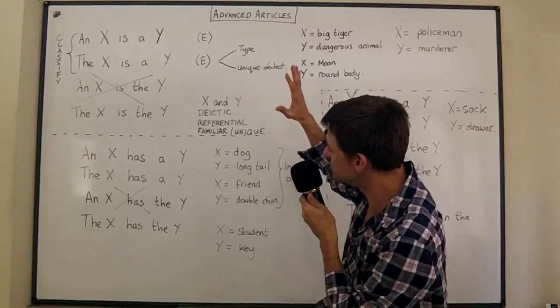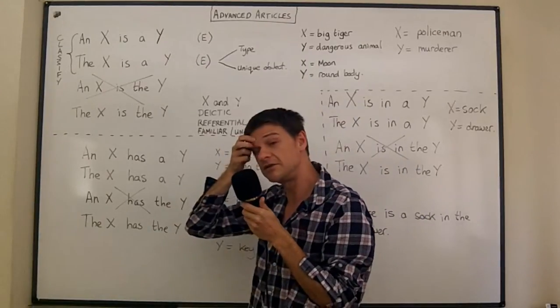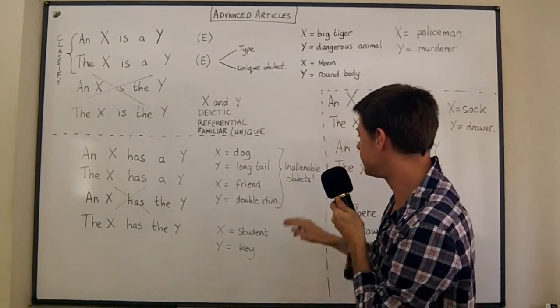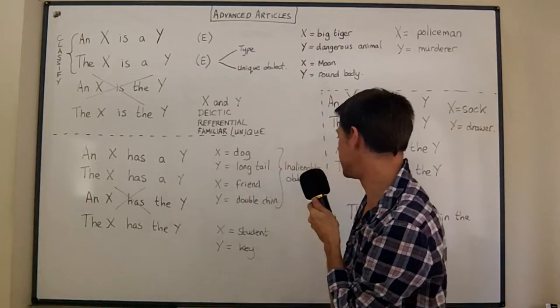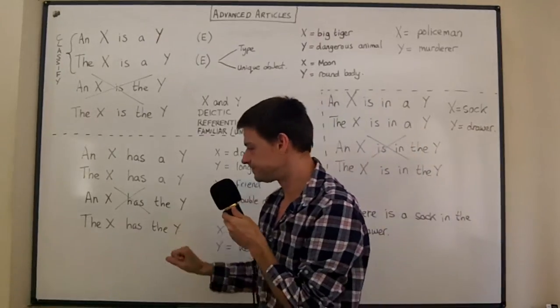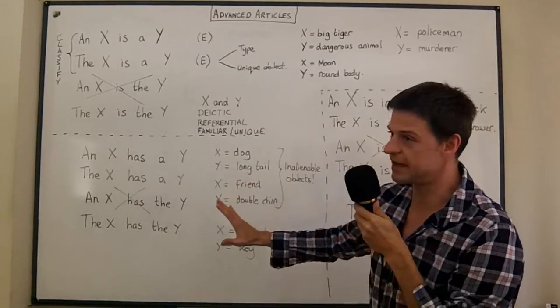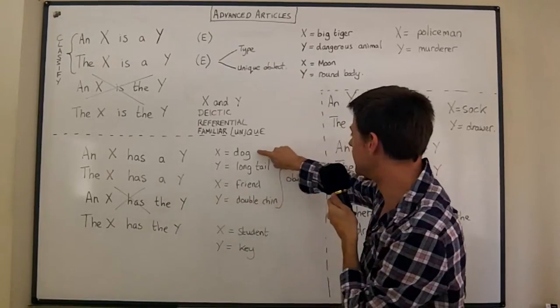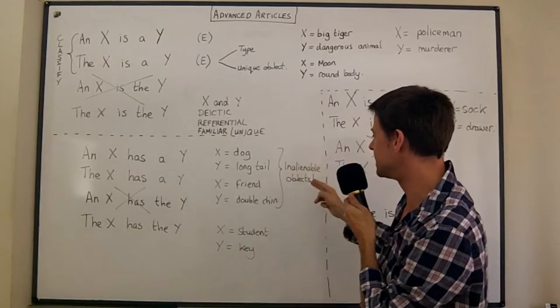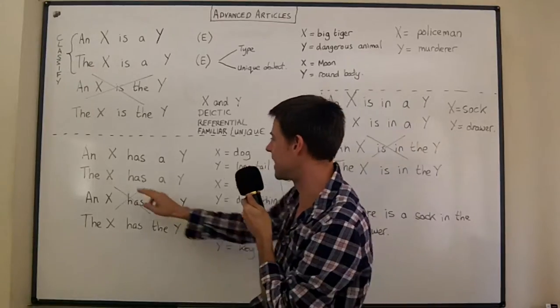Now let's move on to have. I just mentioned in another lesson that have with inalienable objects will always be a, it won't be the. Well let's make that even clearer. If we have for example a dog and a long tail that's an inalienable object. So let's check that out.